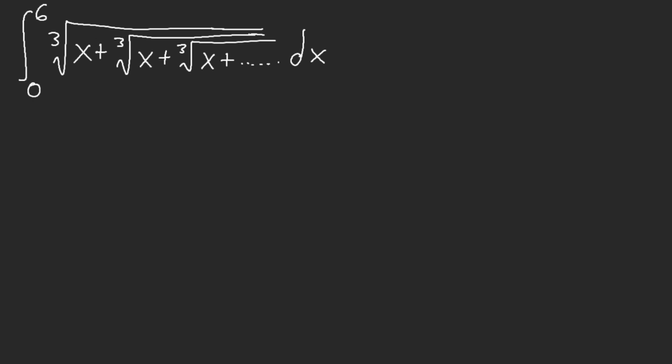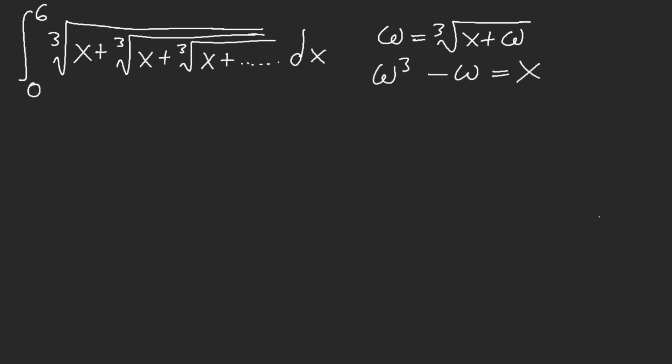This is our last integral, from the Harvard-MIT math tournament Integration B — very, very sneaky with a lot of traps. Let's go ahead and find the inverse. When you try solving for W, you clearly get W cubed minus W equals X. That's nasty — we don't want to solve for W using the cubic equation. However, we can use the inverse function.